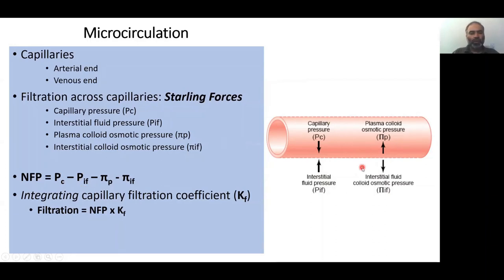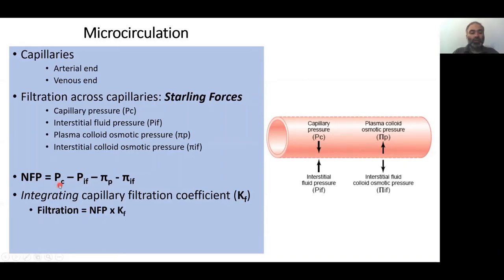To summarize: capillary hydrostatic pressure pushes fluid out; interstitial hydrostatic pressure pushes fluid in; plasma colloid osmotic pressure keeps fluid in; interstitial colloid osmotic pressure pulls fluid out. The net filtration pressure is calculated by combining these four forces — subtracting interstitial hydrostatic pressure and plasma colloid osmotic pressure from capillary hydrostatic pressure, then adding interstitial colloid osmotic pressure.